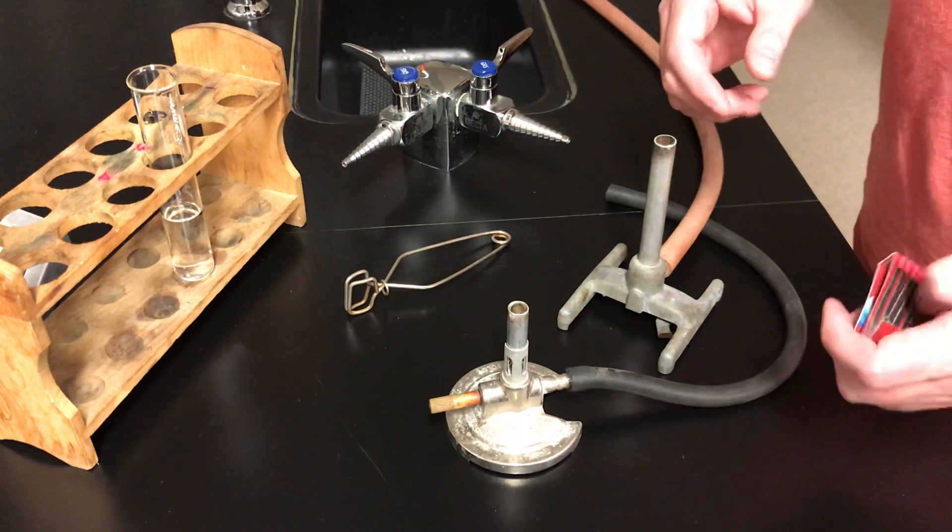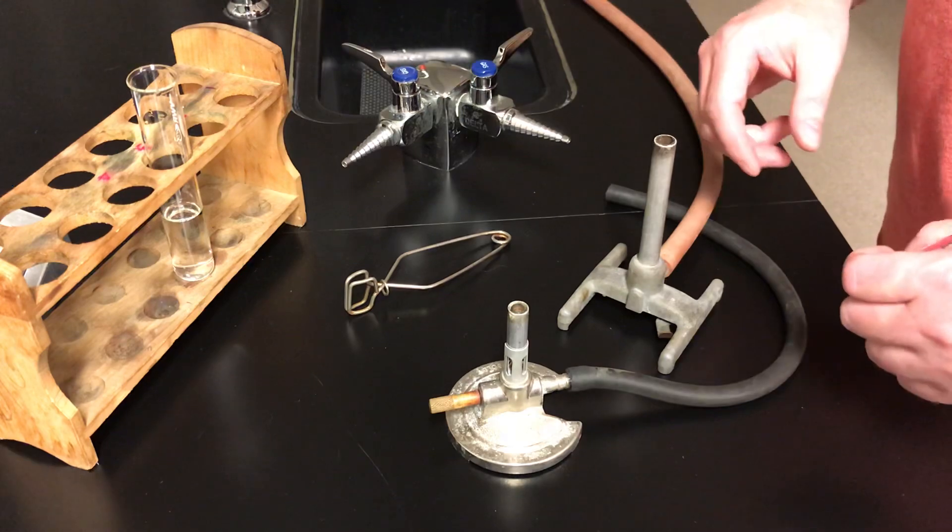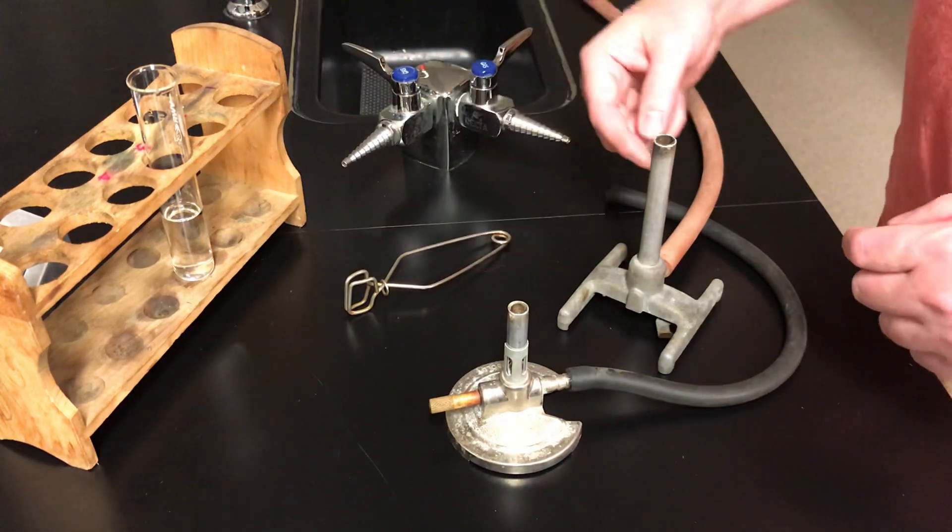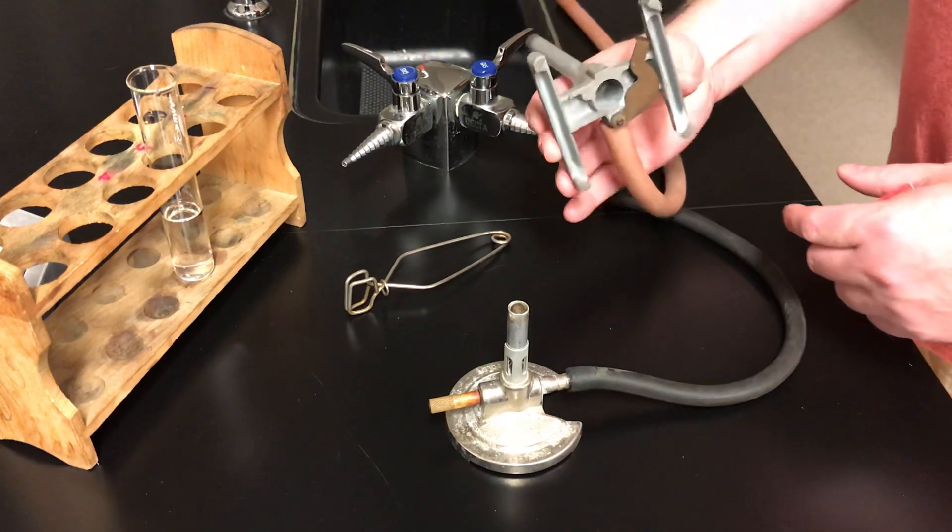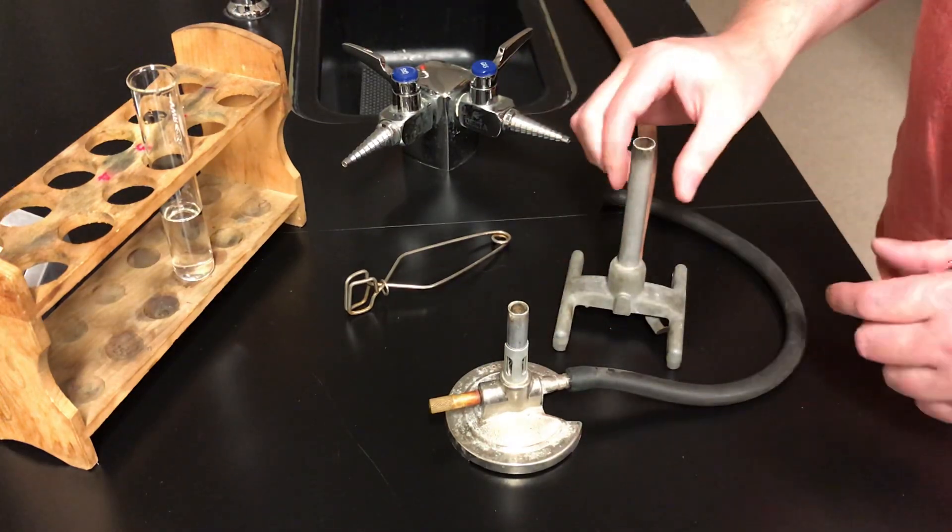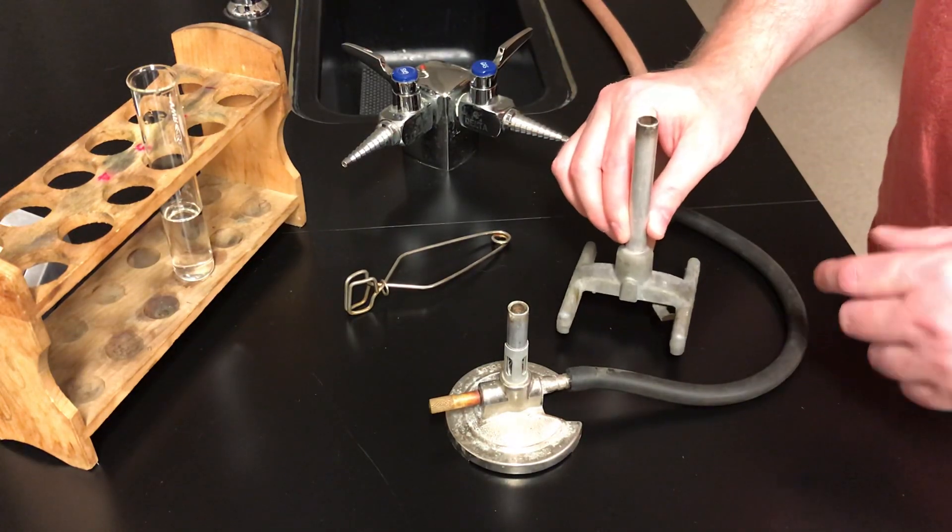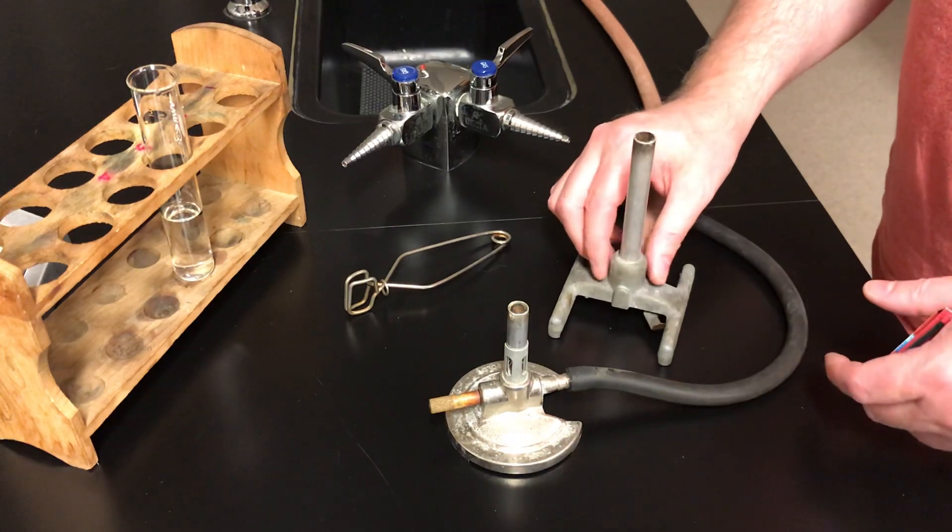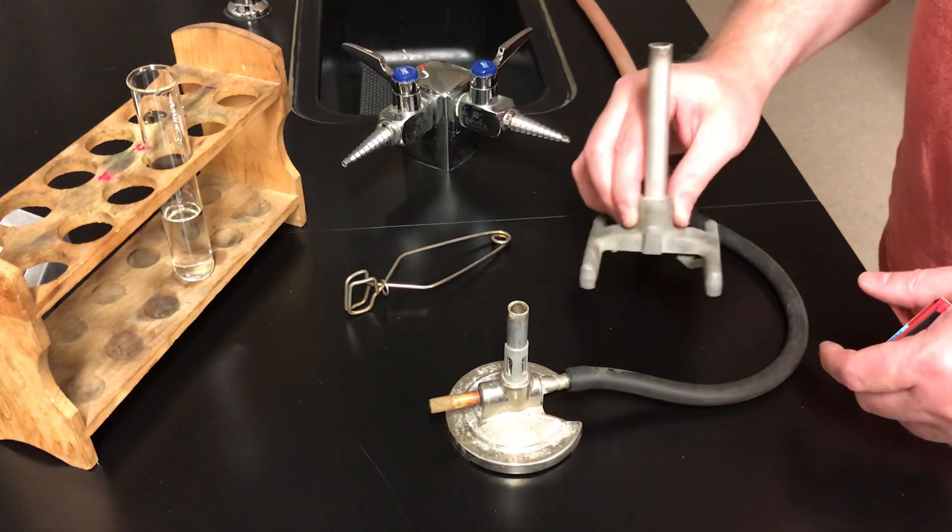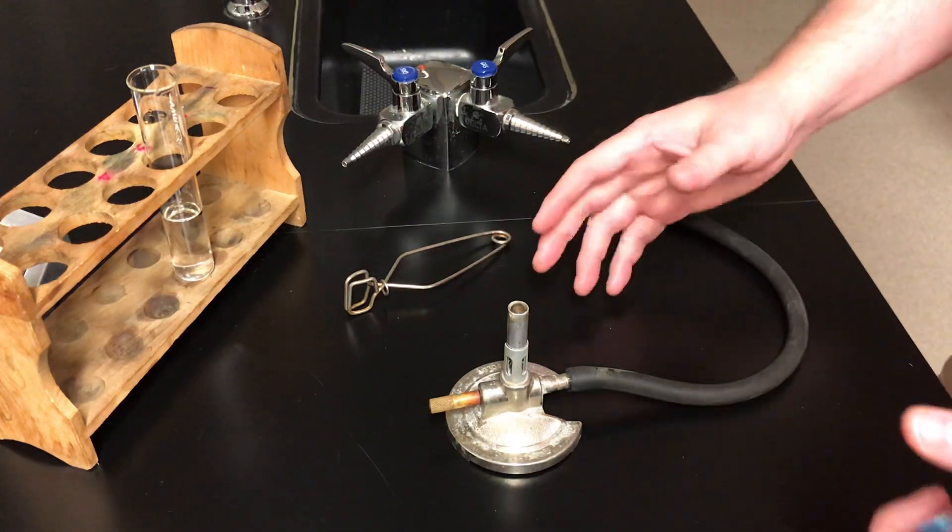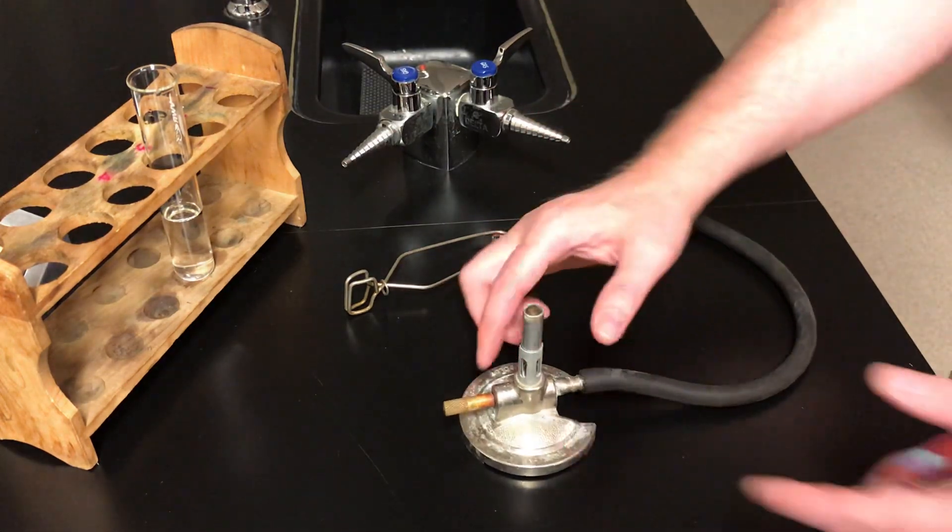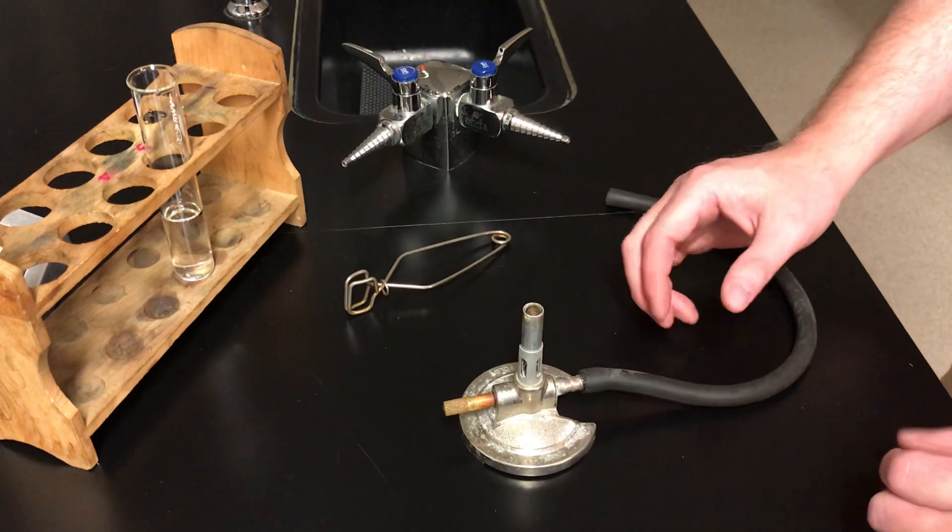When you look under the sinks in the lab at your lab station, you'll find two different types of burners. One type has this H-shaped base and is much larger. This is the Bunsen burner that we use in grades 10, 11, and 12. In grade 9 science, we don't use these ones, so we'll just put that aside. We're going to use what's called a micro burner. It's got a small round base on almost all of them.